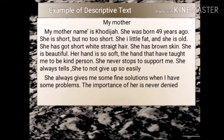Example of descriptive text — My Mother. My mother's name is Kodija. She was born 59 years ago. She is short, but not too short. She is a little fat and she is old. She has got short white straight hair. She has brown skin. She is beautiful. Her hand is so soft — the hand that has taught me to be a kind person. She never stopped to support me. She always tells me to not give up so easily and always gives me some fine solution when I have a problem.